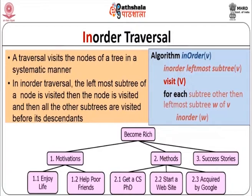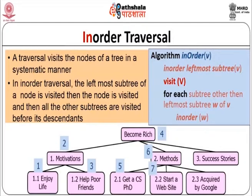In in-order traversal, the leftmost sub-tree is visited, then the node is visited, then all the other sub-trees are visited. The algorithm: visit the leftmost sub-tree, visit node V, then for each sub-tree other than the leftmost sub-tree W of V, do an in-order traversal. First I visit the leftmost node, then I visit the root, then I visit the right node. This is the order in which nodes will be visited - traversal means visiting a node only once. The in-order traversal begins at the leftmost node of the leftmost sub-tree, such as the sub-tree starting with motivation.